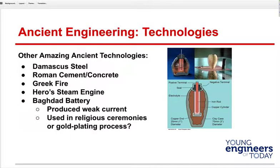The next one is called the Baghdad battery, and these are all technologies we've actually duplicated, so they're legitimate. There's a positive terminal, a negative terminal, a seal, electrolytes put in there, an iron rod, and a copper cylinder — about 75 millimeters or three inches in diameter. We think it was used in religious areas; people would have gotten a light shock and the priests might have thought that demonstrated their power.